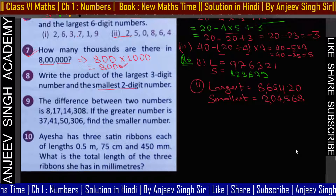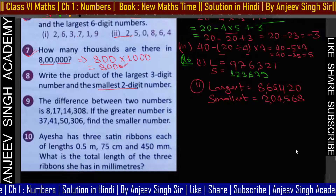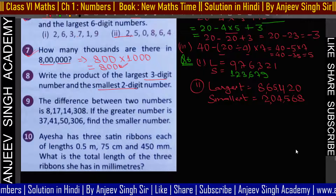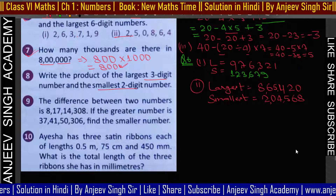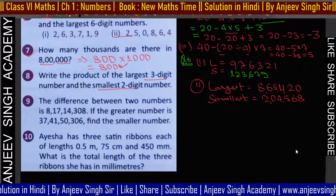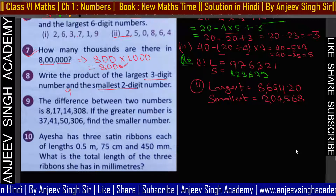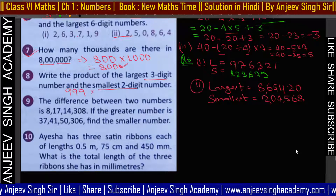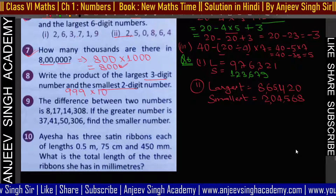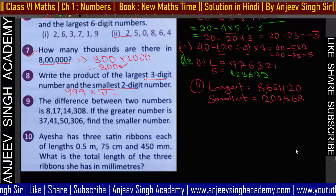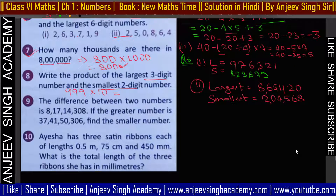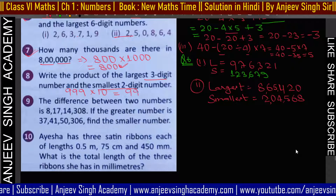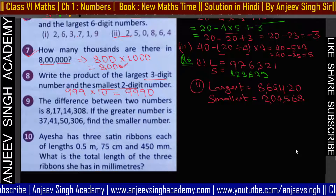Largest 3-digit number है 999, smallest 2-digit number है 10। तो इनका product: 999 × 10 = 9990। यह answer है।